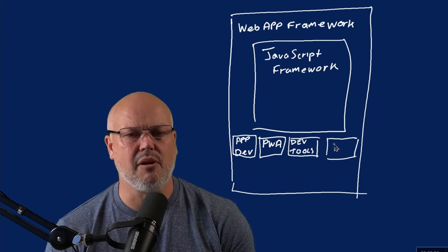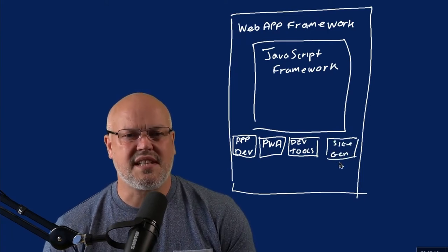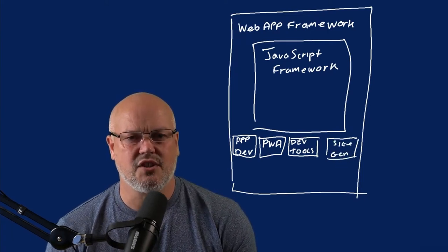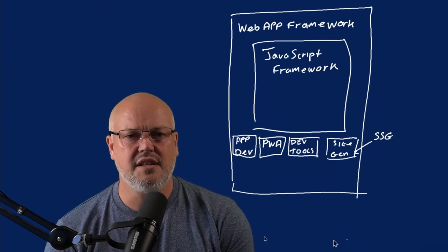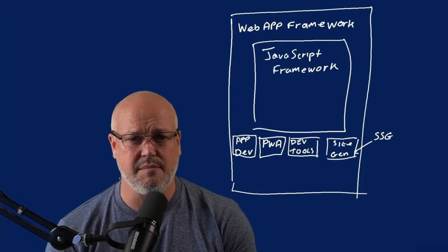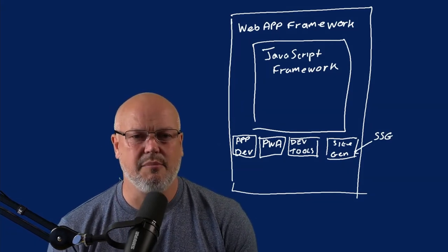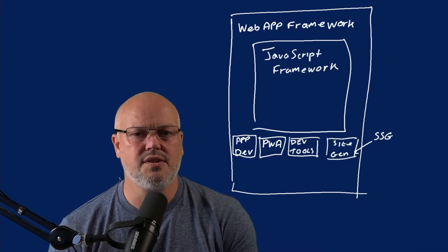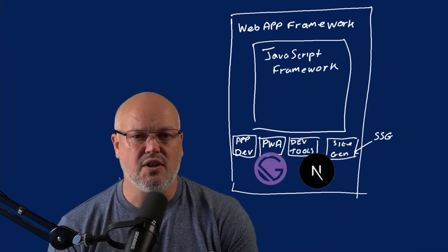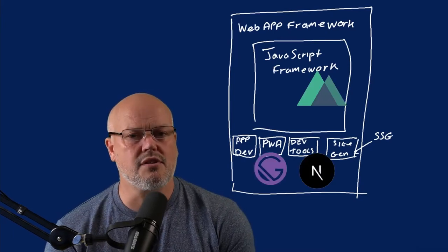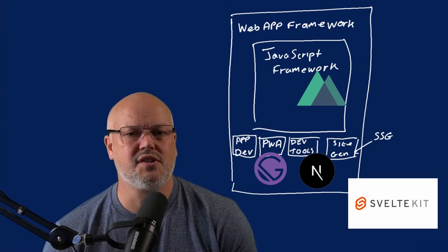Web application frameworks also provide the deployment architectures for static site generation or things like server-side rendering. These frameworks tend to be free and open source. For React development, you'll use frameworks like Gatsby or Next. For Vue, you'll use Nuxt.js. And for Svelte, you'll use SvelteKit.